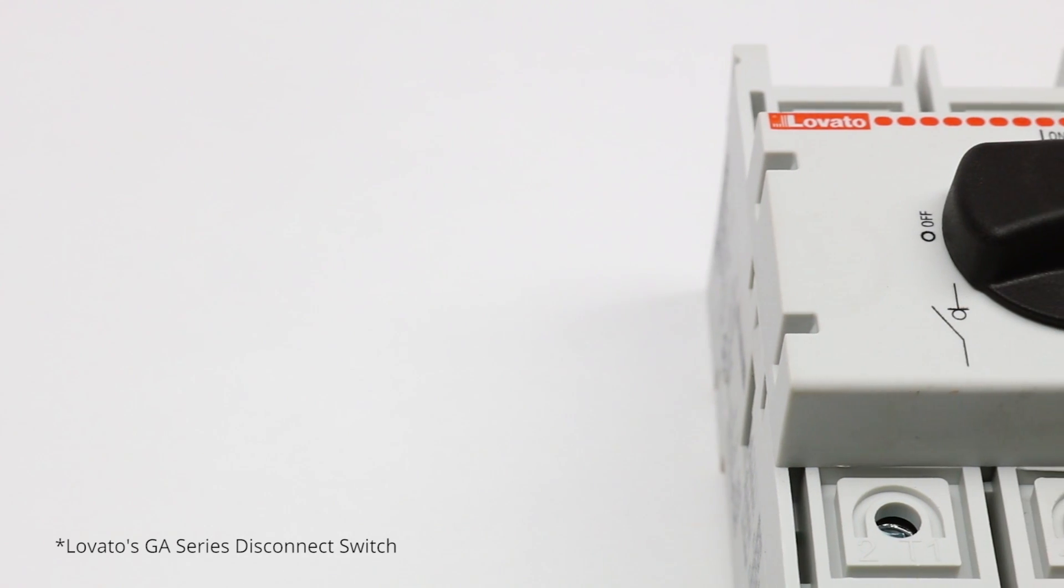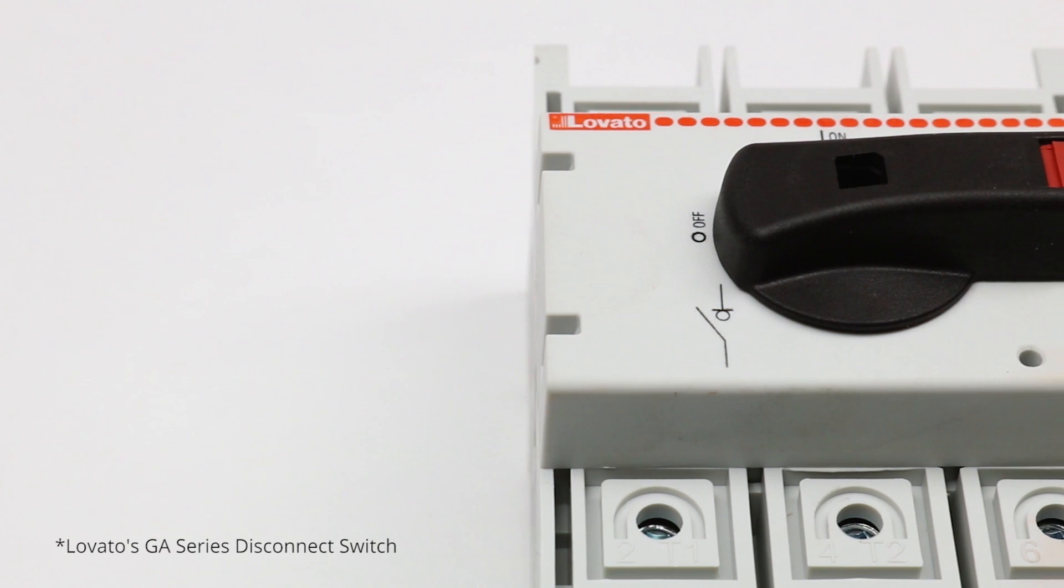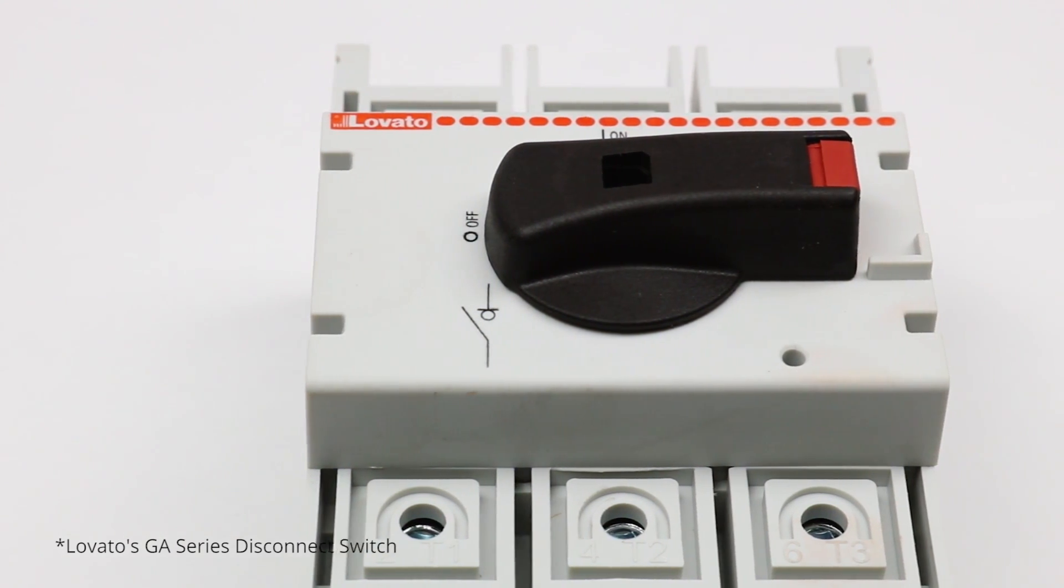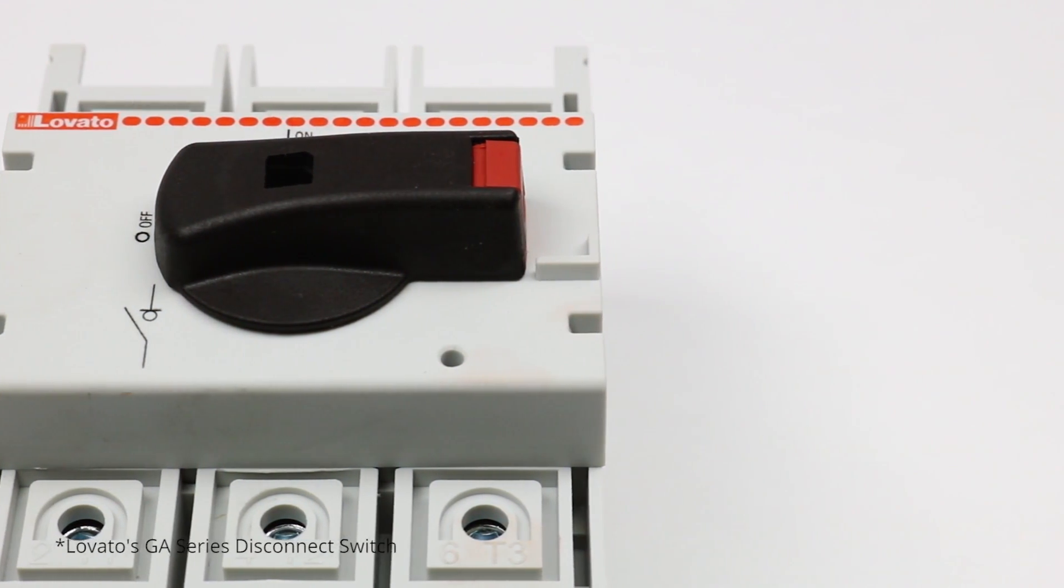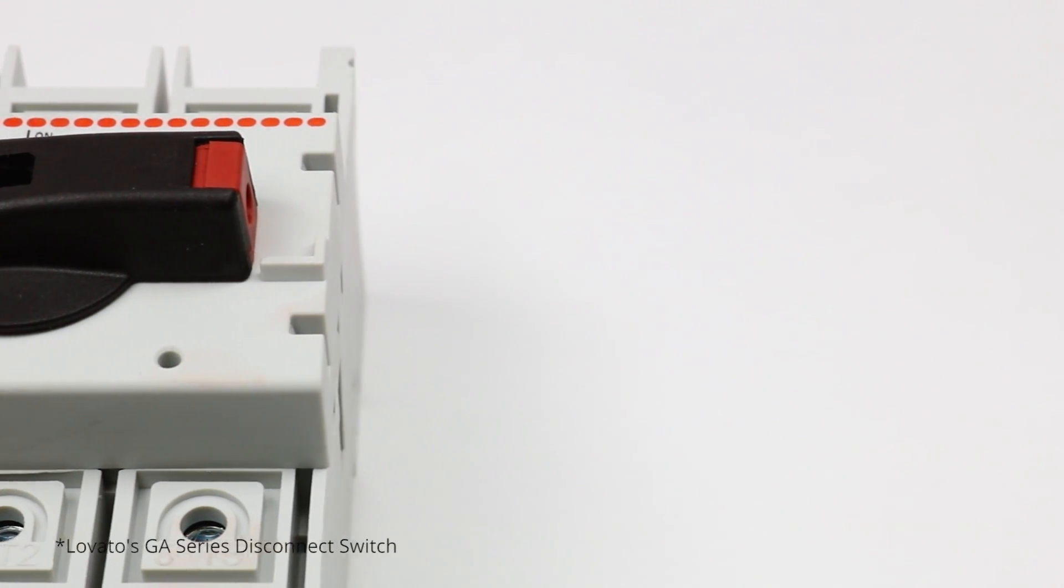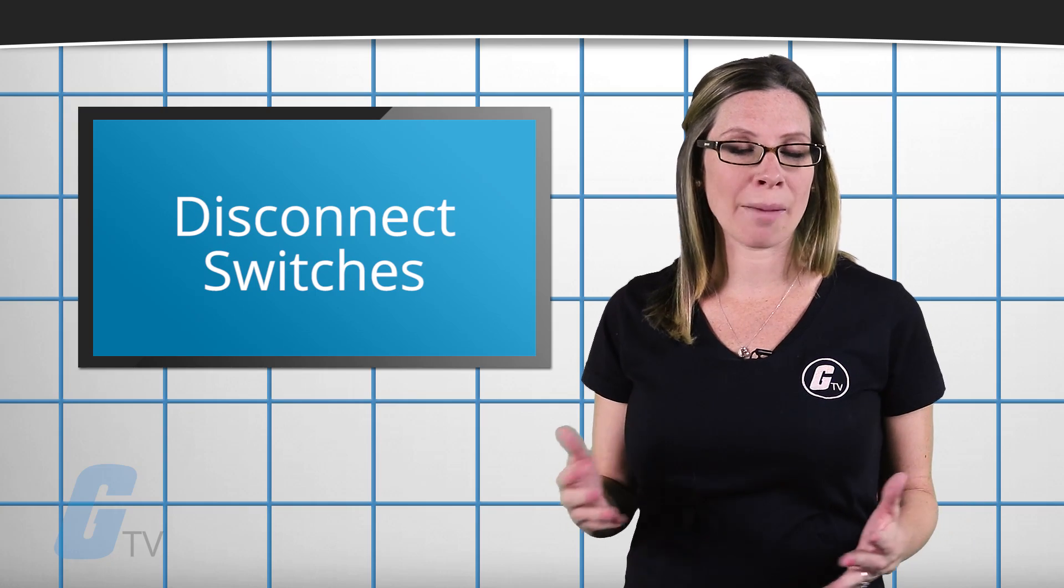Unlike disconnectors, disconnect switches combine the properties of a disconnector and a load switch, meaning that they provide a safety isolation function while also being able to make and break nominal currents.